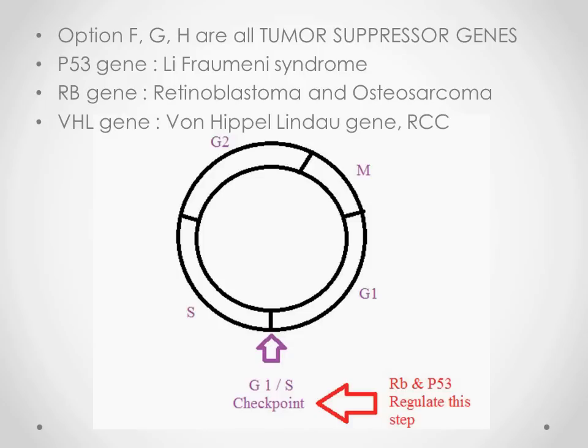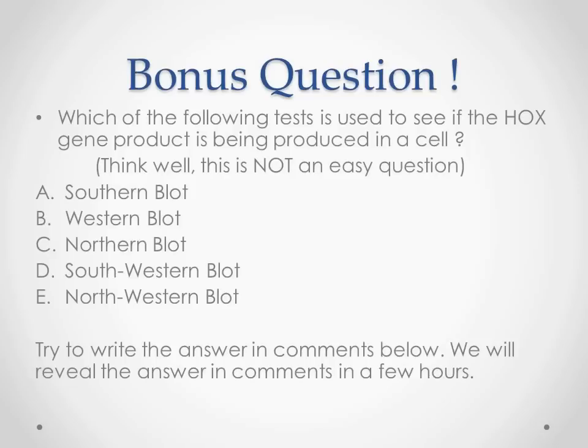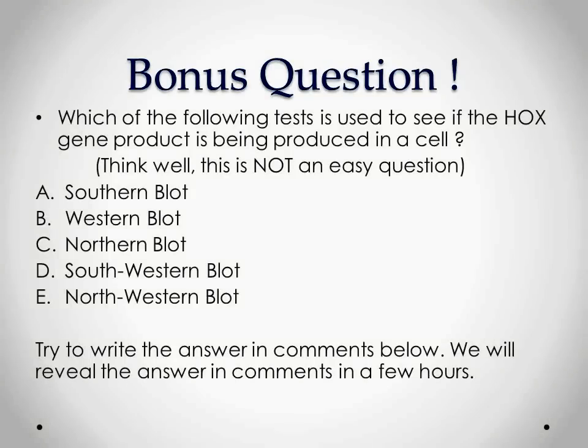Below these options is a cell cycle diagram, just here to jog your memory. The G1 to S phase transition is regulated by the RB gene and P53 gene. The G1 to S phase transition is the most important checkpoint in the entire cell cycle. You probably knew this already, but just review it one more time: G1 to S phase — RB and P53 gene.